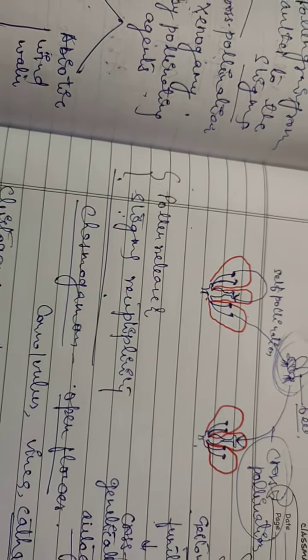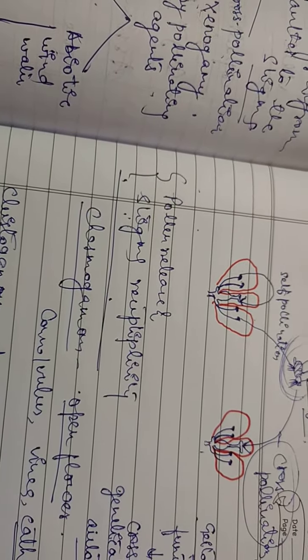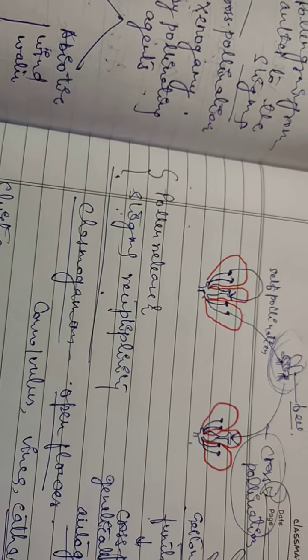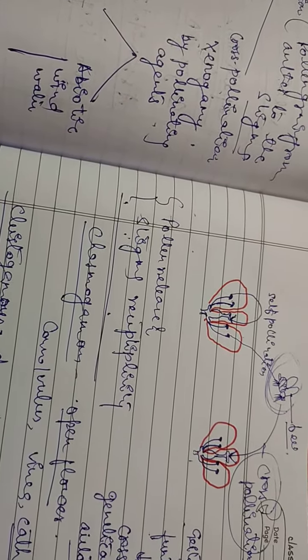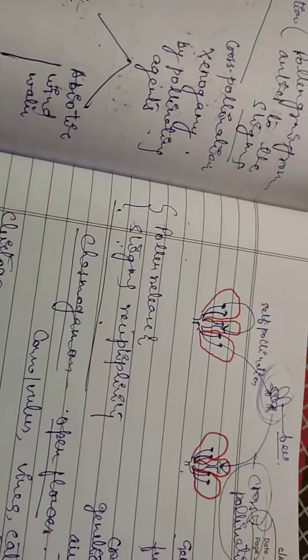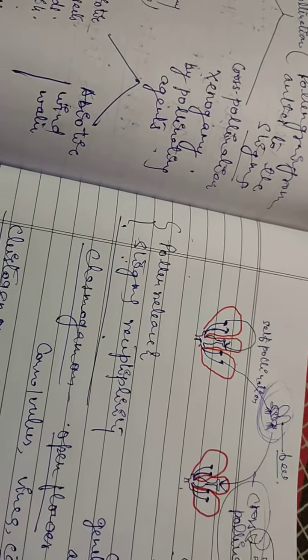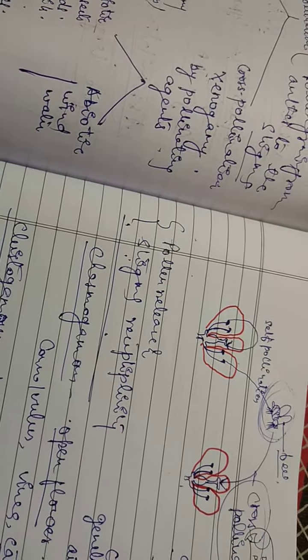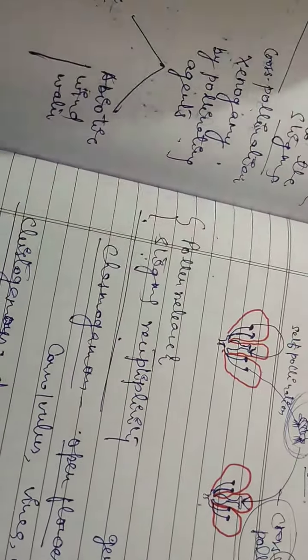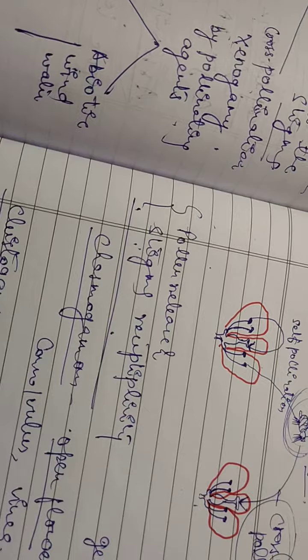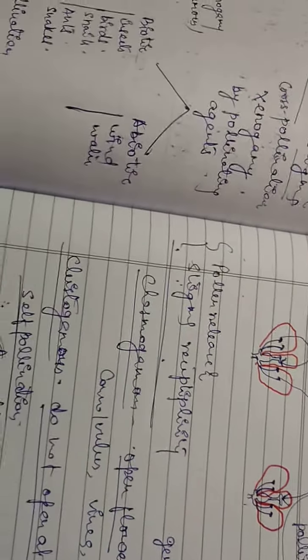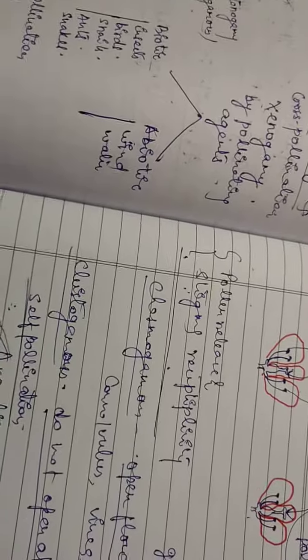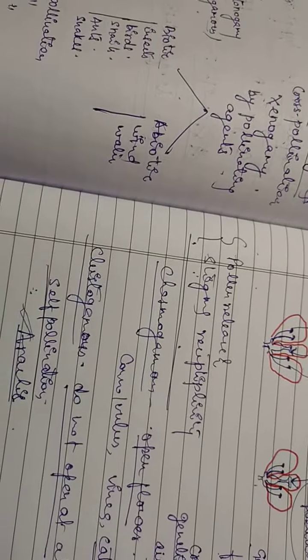Cross-pollination produces significant genetic variation. In contrast, self-pollination produces no variation and can sometimes lead to inbreeding depression. So this covers the key concepts about pollination.